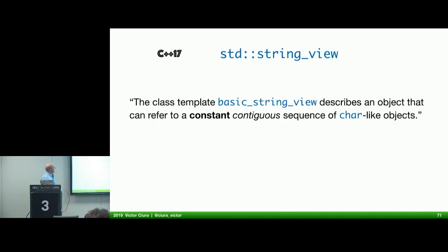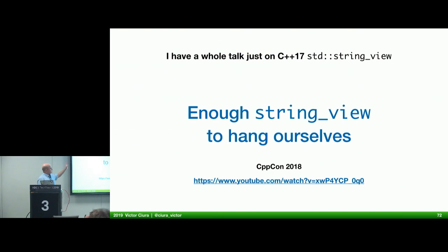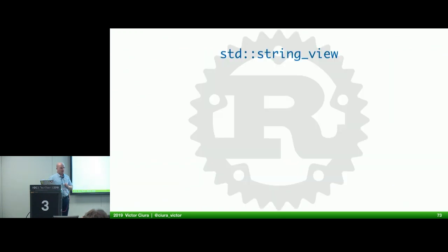Getting to C++17: StringView, our first candidate for analysis. StringView is a class template that describes an object that can refer to a constant, contiguous sequence of char-like objects. It does not manage the storage it refers to — the lifetime is up to the caller, hence the name "view." I have a whole talk from last year on StringView, covering problems, guidance, and what it's good for. I do recommend you watch that. Does anybody know why I have the Rust watermark on this slide?